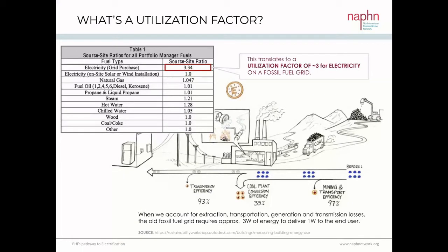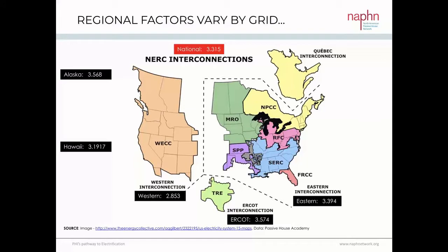In the US, the historic grid purchase utilization factor for electricity was about 3.34 on the fossil fuel grid. But that wasn't uniform everywhere — our US grid is divided into five sectors, each varying slightly. Alaska was historically the dirtiest at about 3.5. The Western states — California, Washington, and Oregon — were one of the cleaner grids at 2.8. So the 3.34 wasn't universal; it varied, but that was the average.